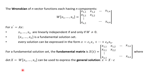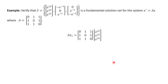The determinant of capital X is the Wronskian. This can be used to express the general solution: little x equals capital X times c, meaning for x prime equals a times x, the general solution can be written as the fundamental matrix X times an arbitrary constant vector c.